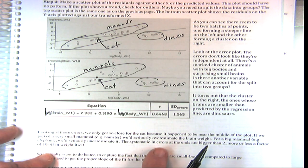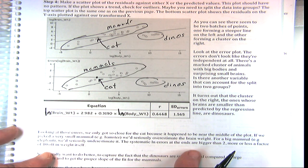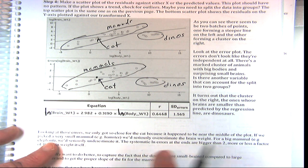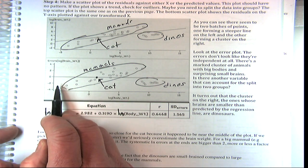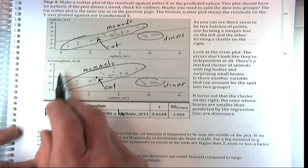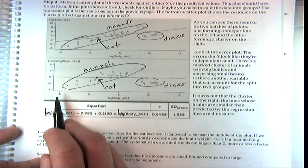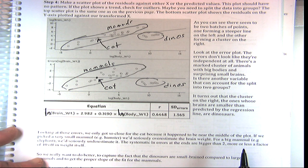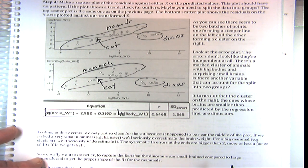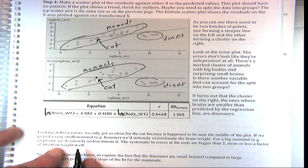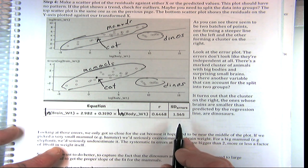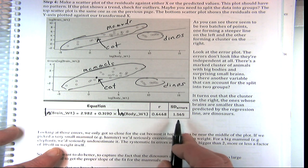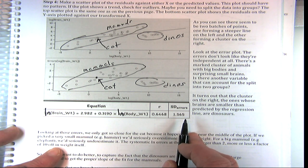So we can do better — these are really big errors. The error in the log is over two, which means in the actual brain weight it's more than a factor of 10 in weight itself. So if we look at these errors, we need to do better than that standard deviation of the error.